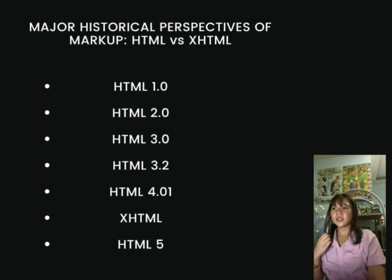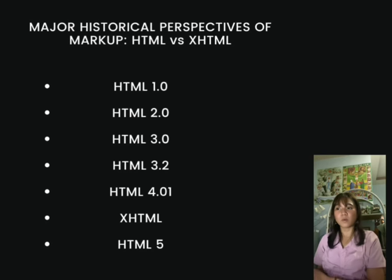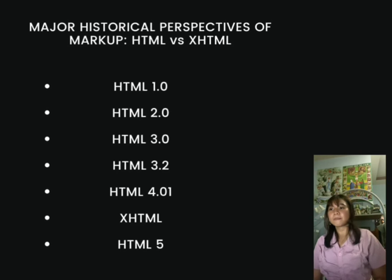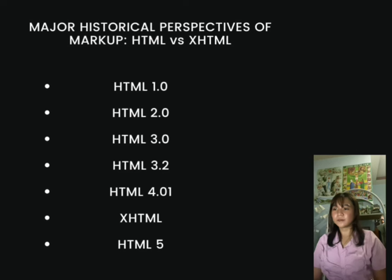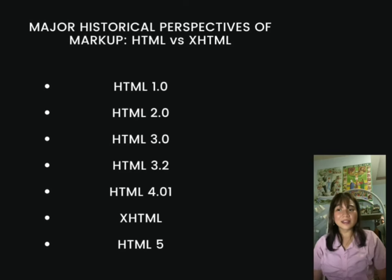Looking at the major historical perspectives of markup languages: the development of HTML influenced how developers produce and use web content. HTML 1.0 was created in 1993 by Tim Berners-Lee. HTML 2.0 was developed in 1995, followed by HTML 3 in 1995 and HTML 3.2 in 1997, which was the first widely adopted version and brought significant improvements. HTML 4.01 was a significant advancement providing better support.